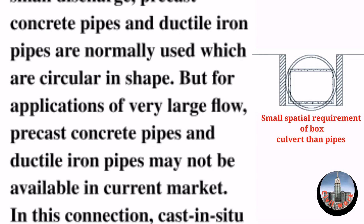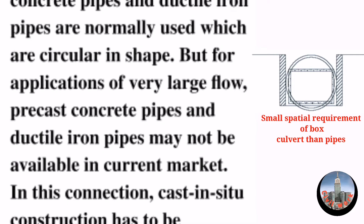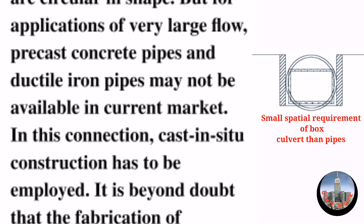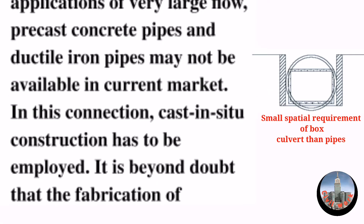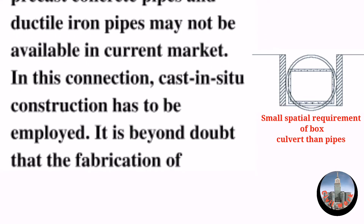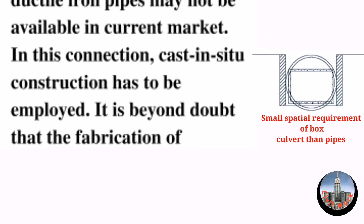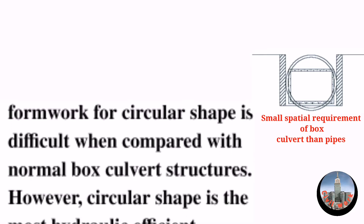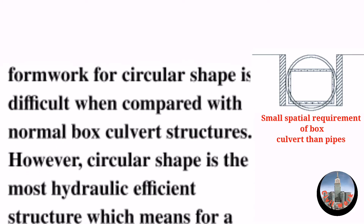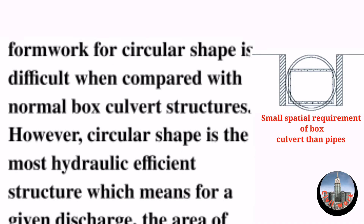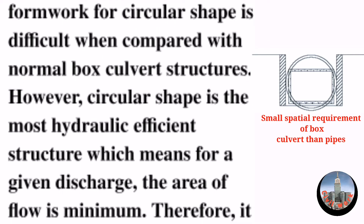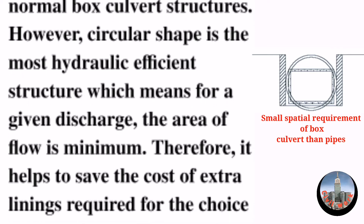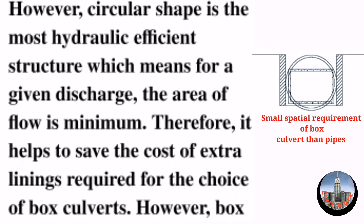For applications involving very large flow, precast concrete pipes and ductile iron pipes may not be available in the current market. In this connection, in-situ construction has to be employed. It is beyond doubt that the fabrication of formwork for a circular shape is difficult when compared with normal box culvert structures. However, the circular shape is the most hydraulically efficient structure, meaning for a given discharge the area of flow is minimum, which helps to save cost.